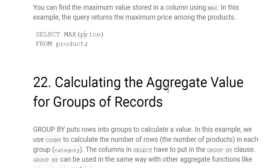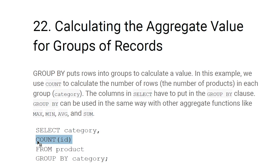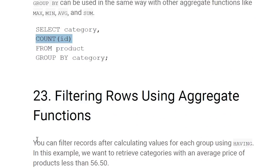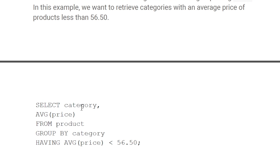Calculating aggregate values from groups of records: use an aggregate function combined with GROUP BY. For example, SELECT category, COUNT(id) FROM product GROUP BY category — this returns how many ids exist in each category.